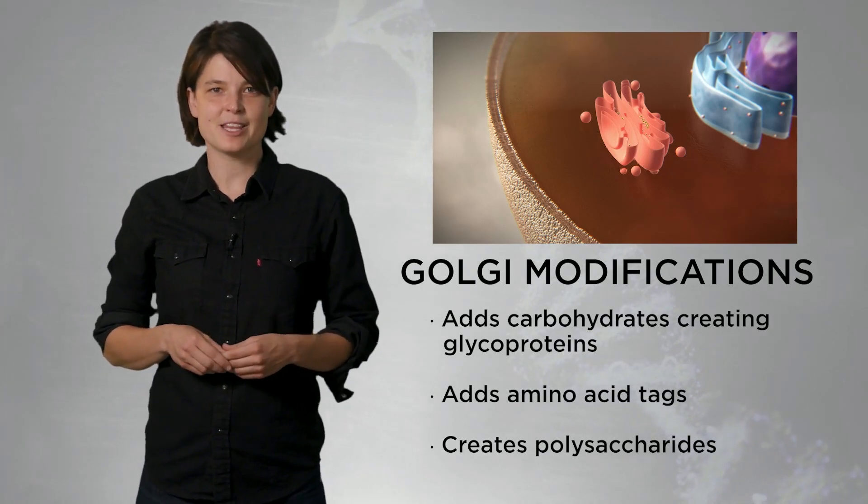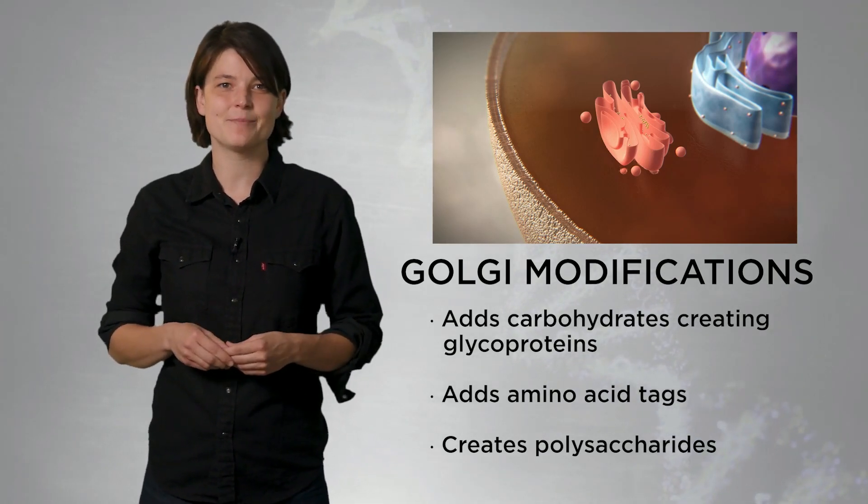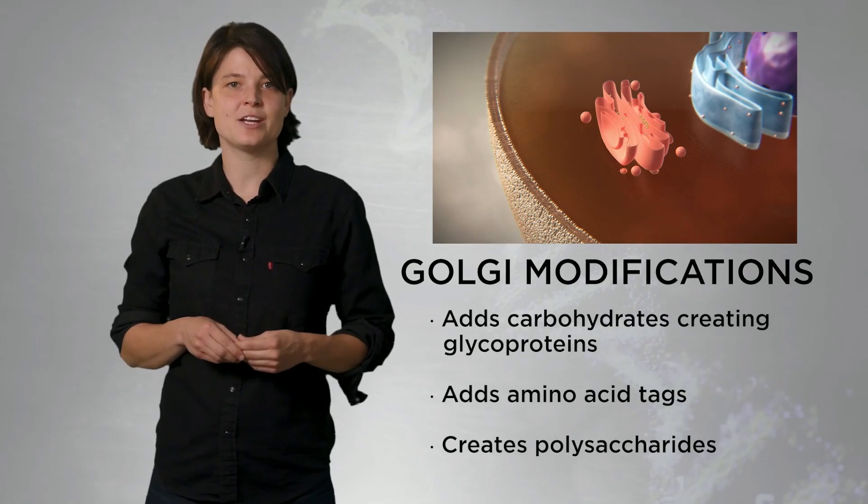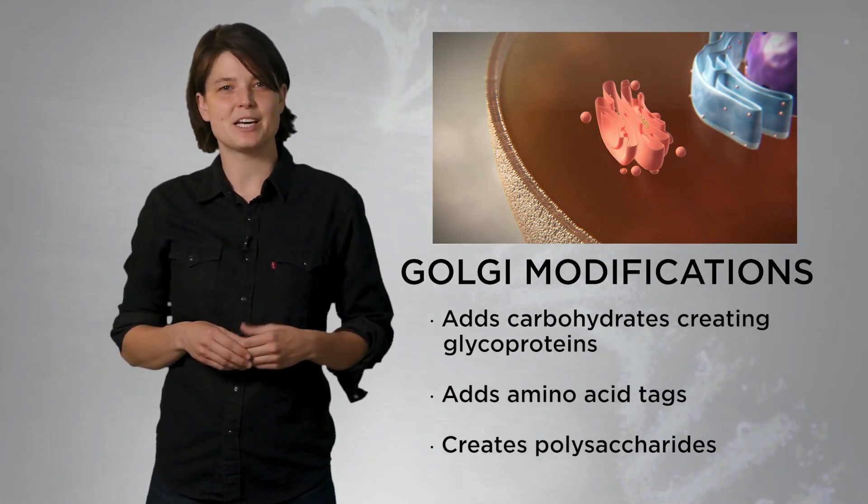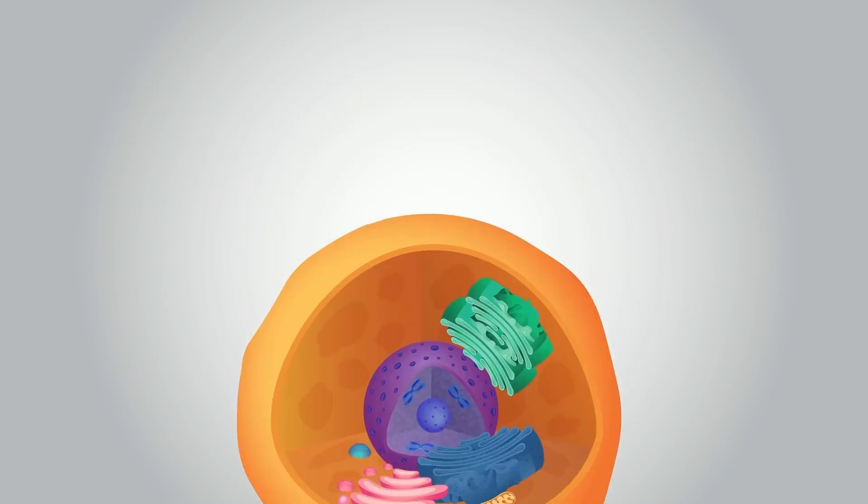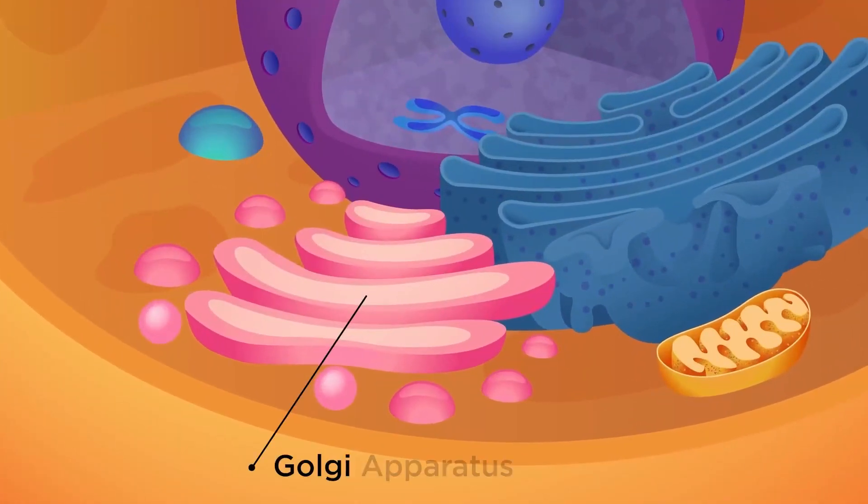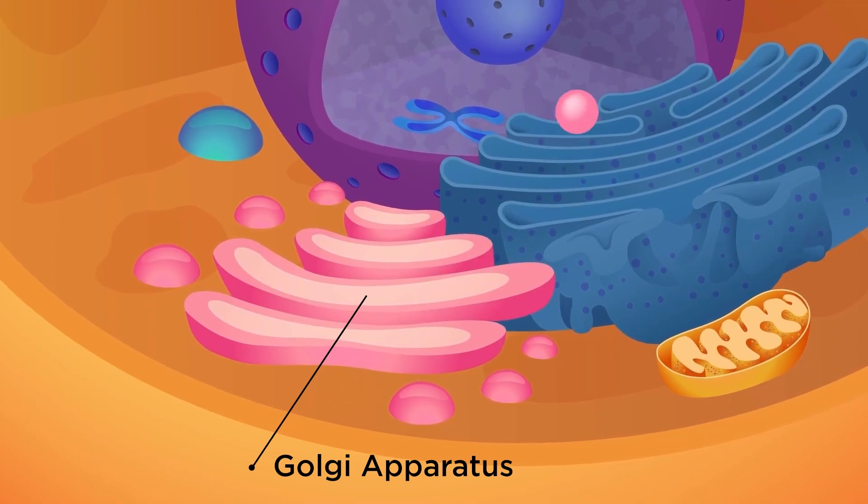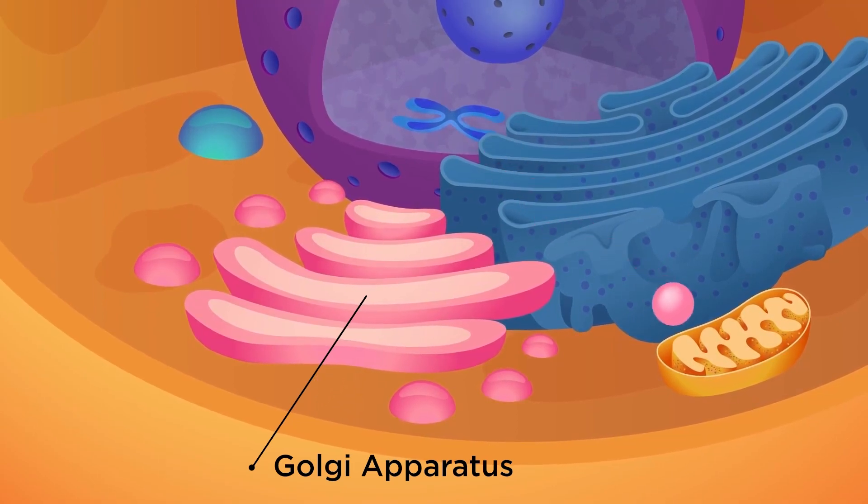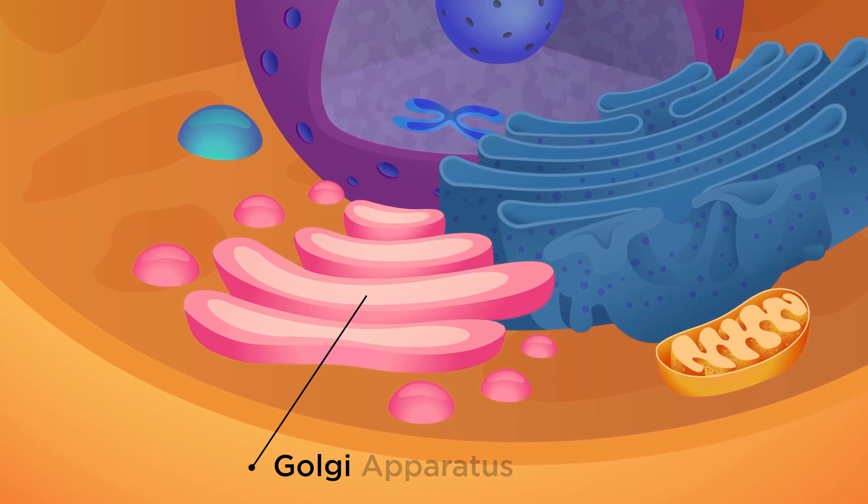In addition to modifying the products from the endoplasmic reticulum, the Golgi creates long-chain carbohydrates, called polysaccharides, that will be destined for the plasma membrane. Some of the vesicles leaving the trans-Golgi will return to the cis-Golgi, where their contents will aid the function of the Golgi apparatus. Other products will travel via vesicles to other organelles, or to the plasma membrane for secretion.